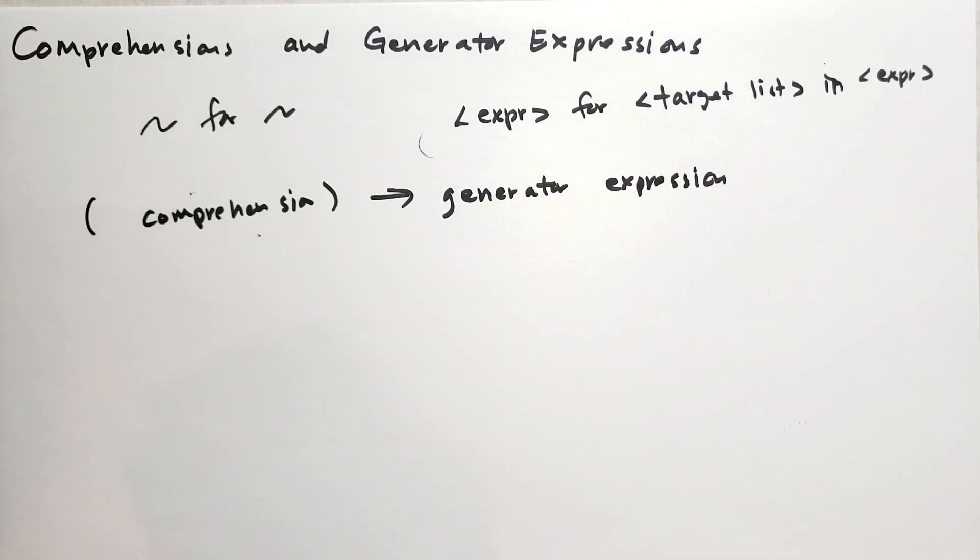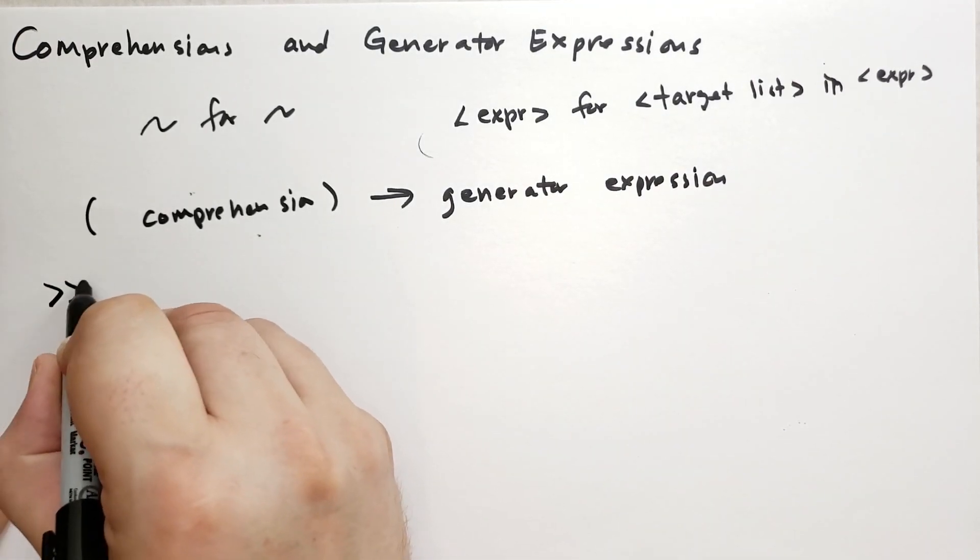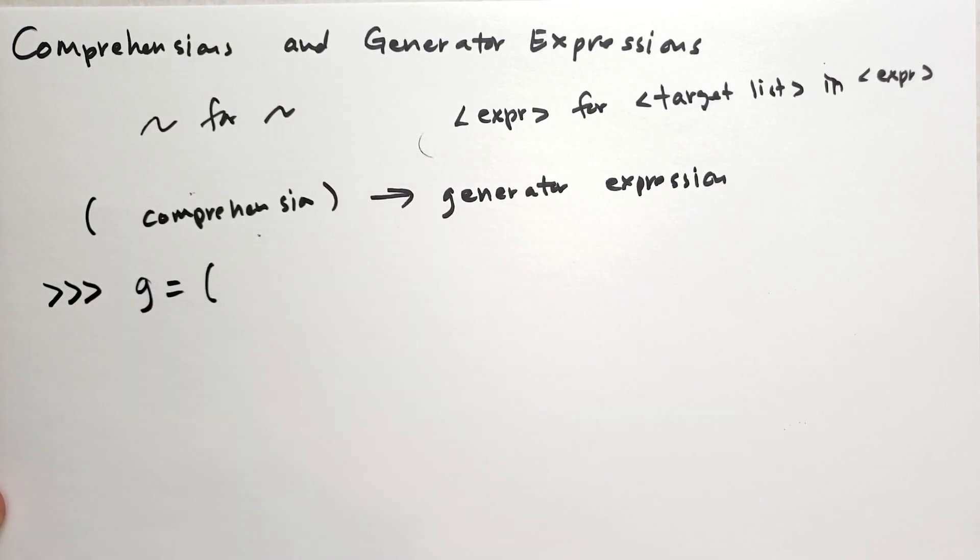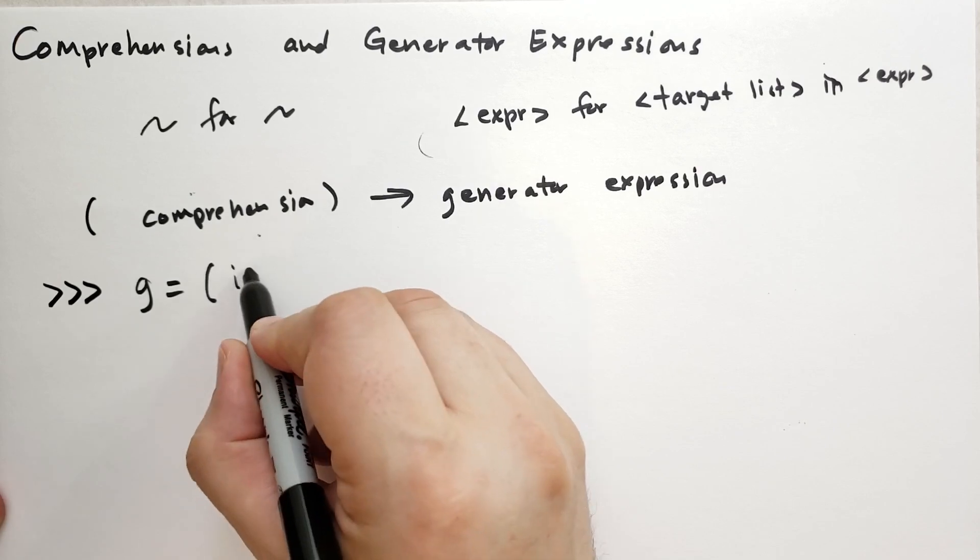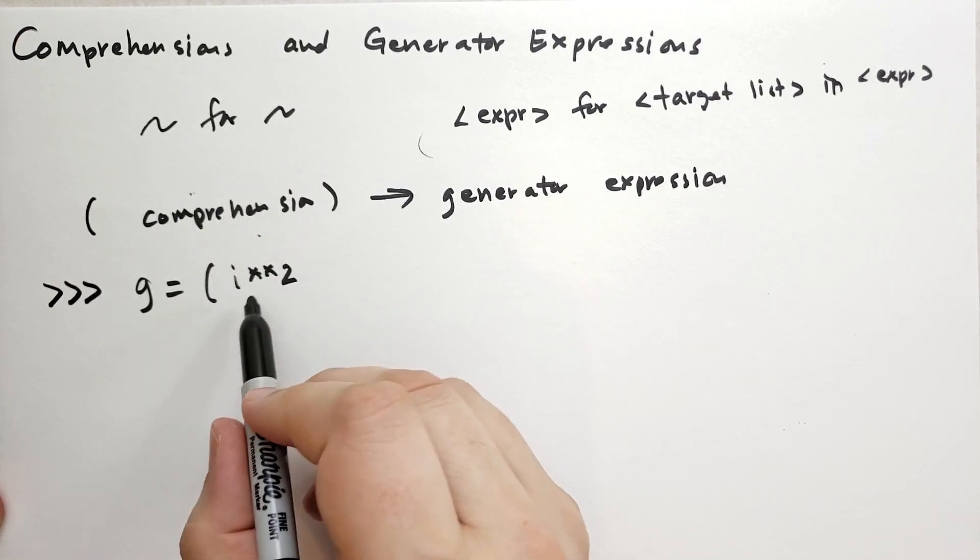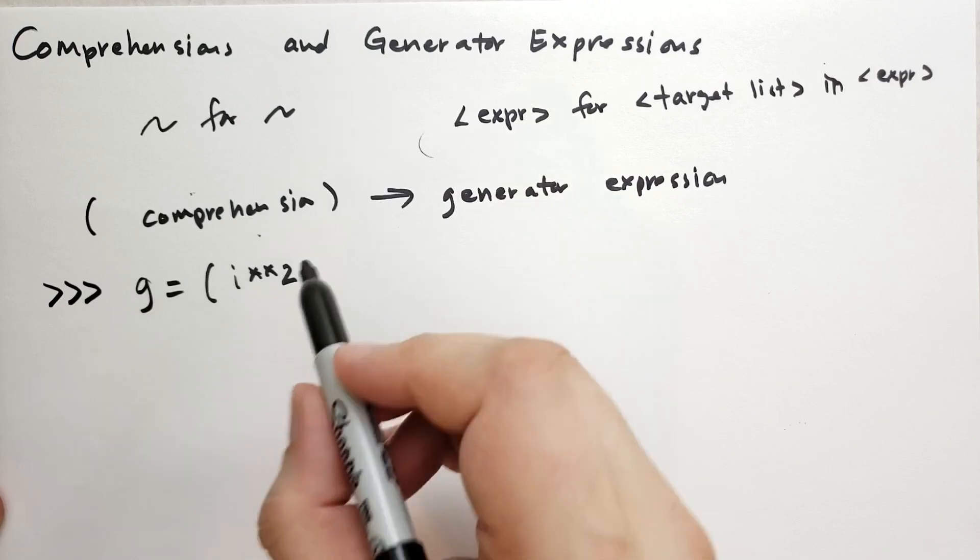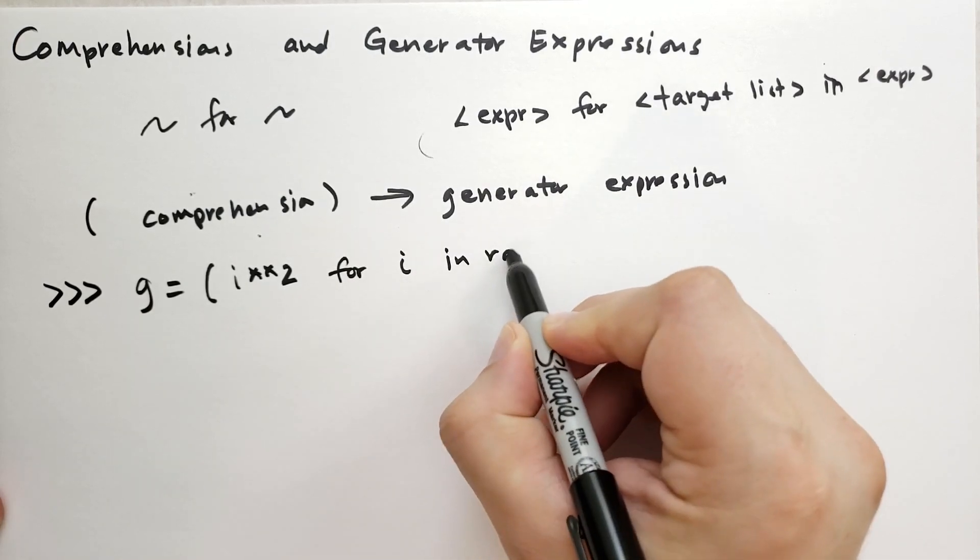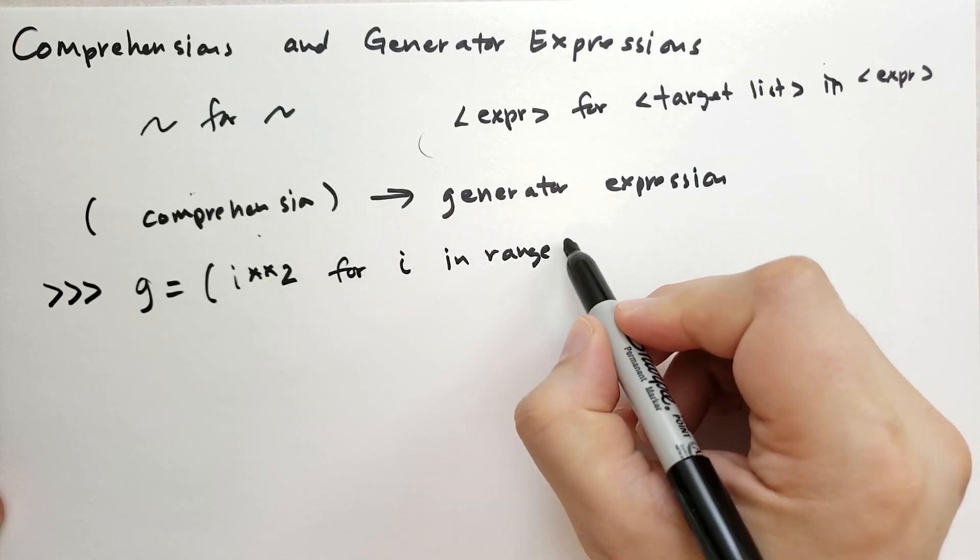Let me give you an example of a generator expression. You can try this out in interactive mode. So we're going to say g is equal to a parenthesis. We're going to have i star star 2, which is the exponent. This is taking i and raising it to the power of 2. For i in range, let's say 10.